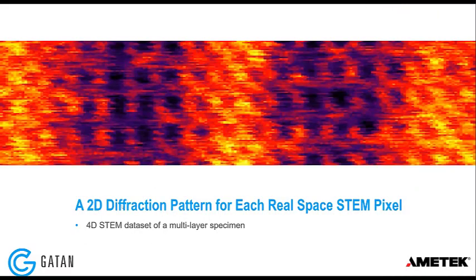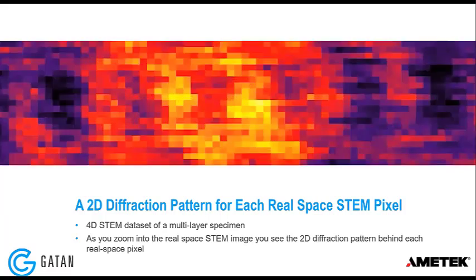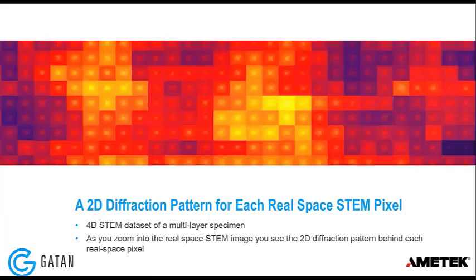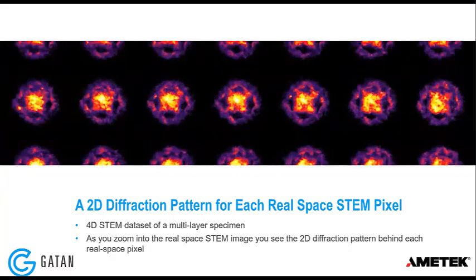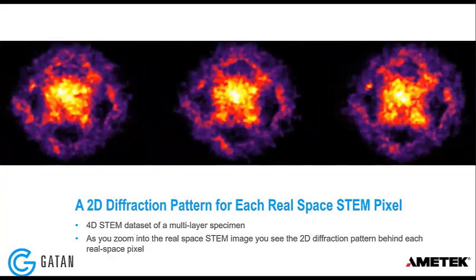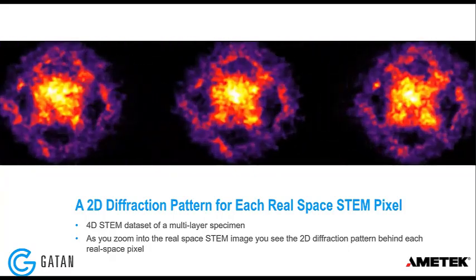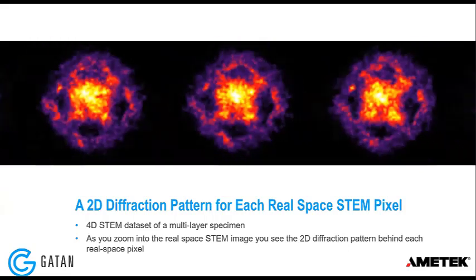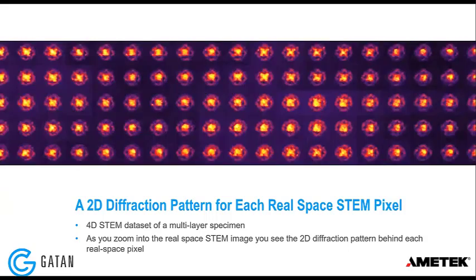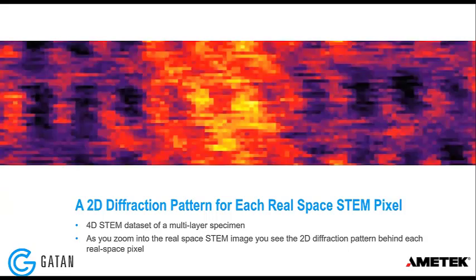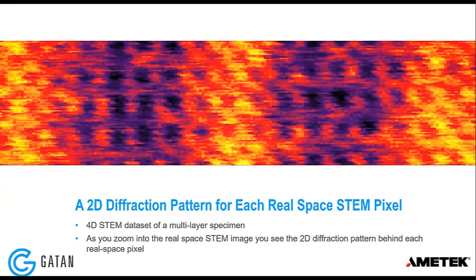We talked about what 4D STEM is. As you saw during the experiments that Roberto just showed us, at each probe position in a two-dimensional scan, we collect a two-dimensional diffraction pattern — that's why this is commonly called a 4D STEM experiment. So you have two-dimensional diffraction and two-dimensional scanning of the sample.